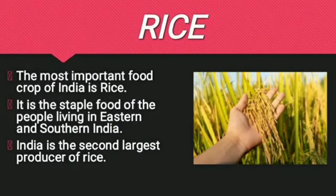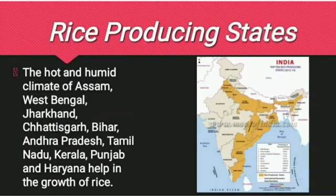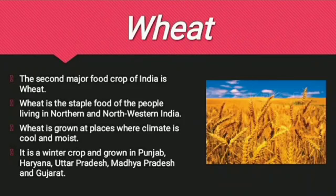Rice is the most important food crop of India. It is the staple food of the people living in eastern and southern India. India is the second largest producer of rice. In India, rice crops are found in the hot and humid climates of Assam, West Bengal, Jharkhand, Chhattisgarh, Bihar, Andhra Pradesh, Tamil Nadu, Kerala, Punjab, and Haryana.